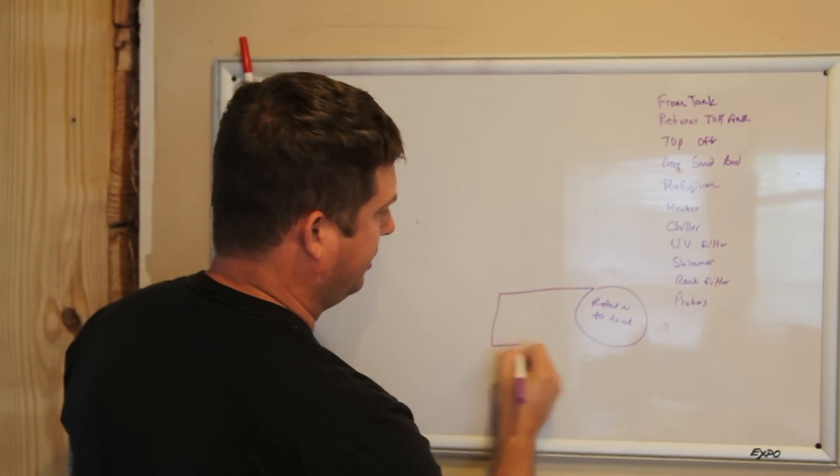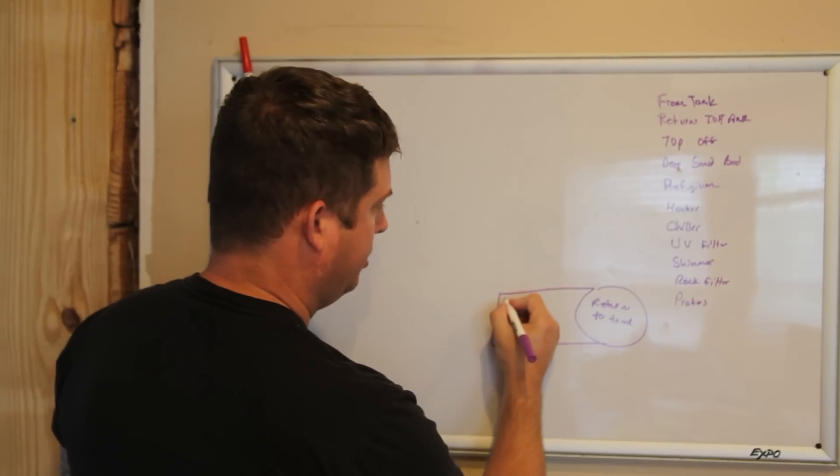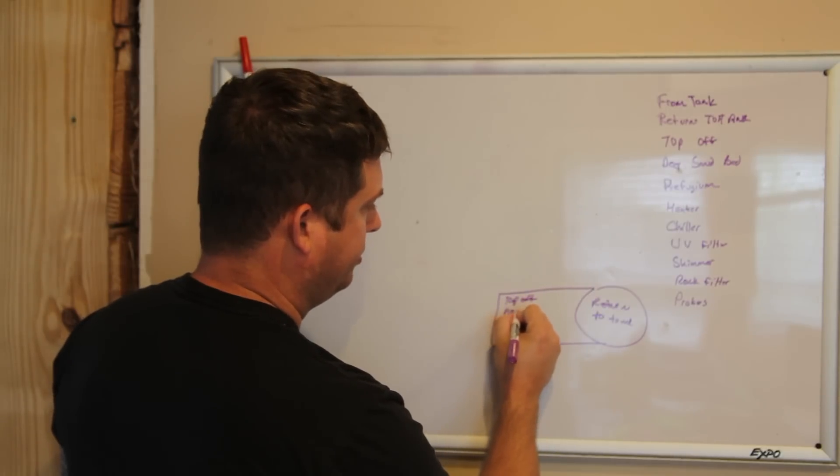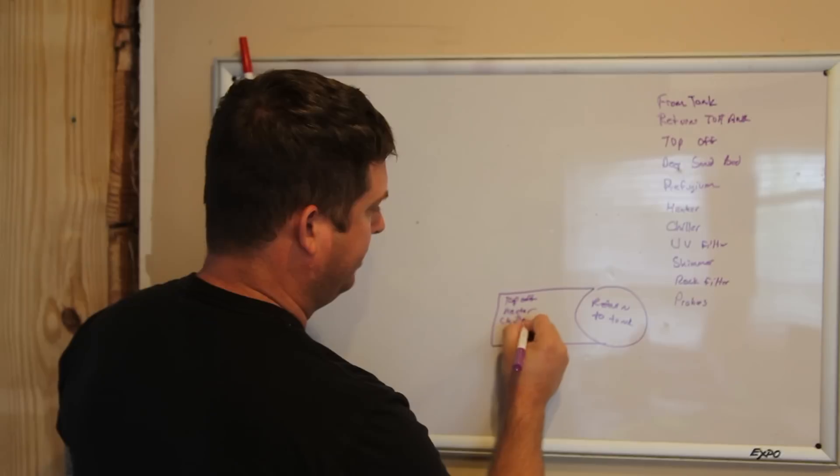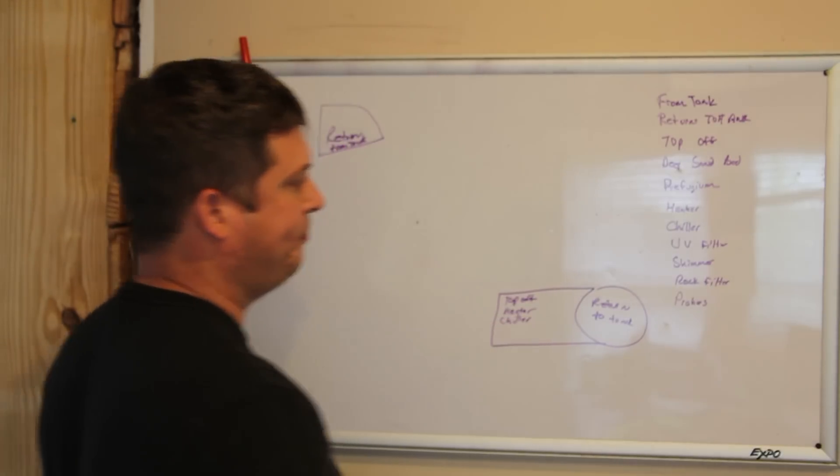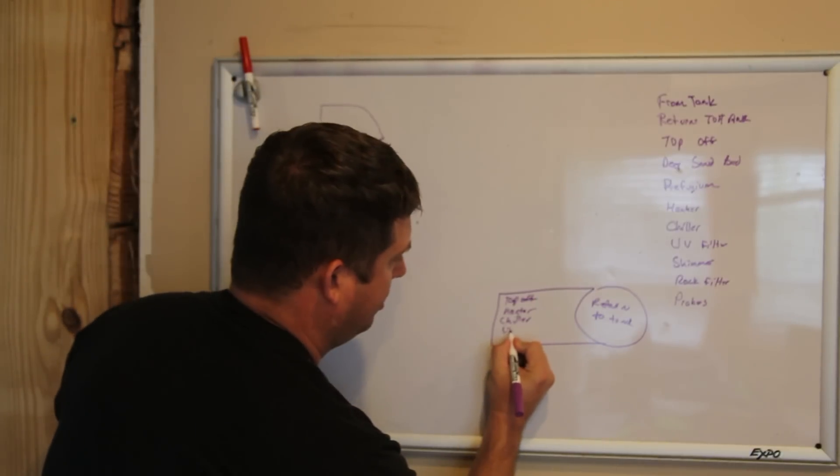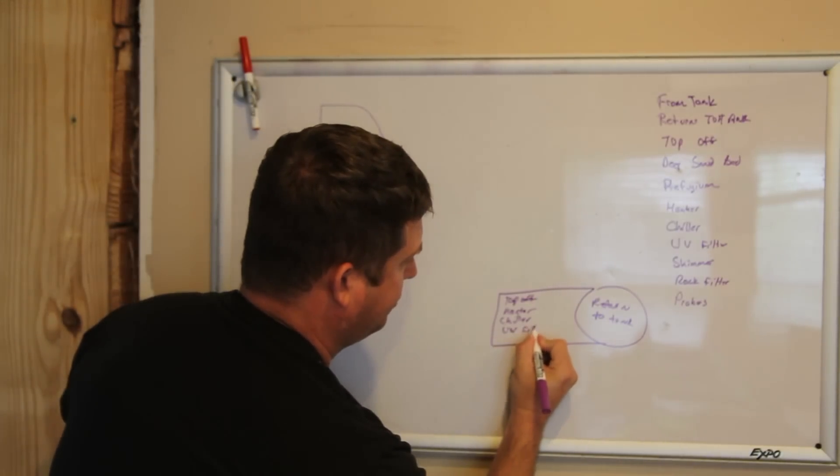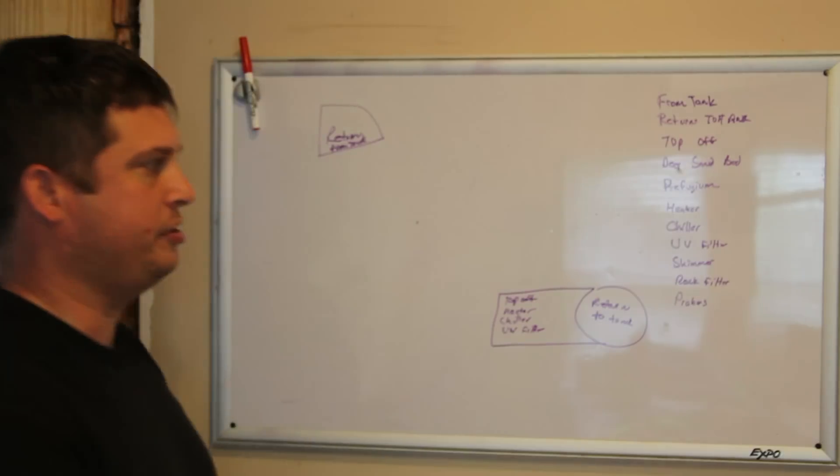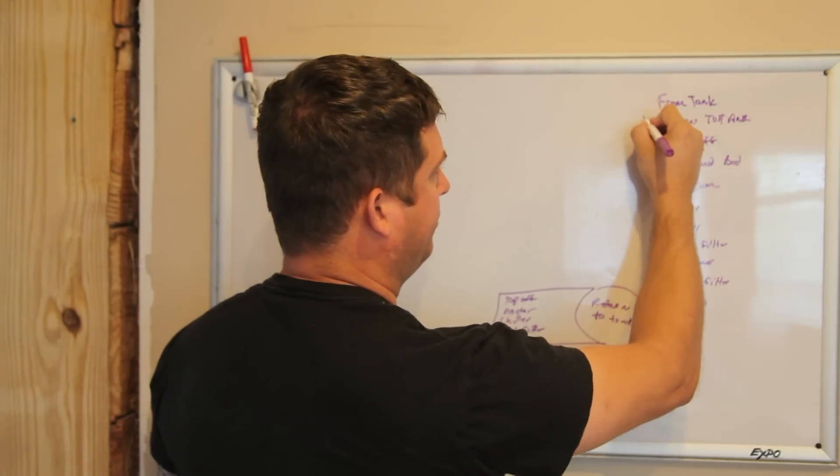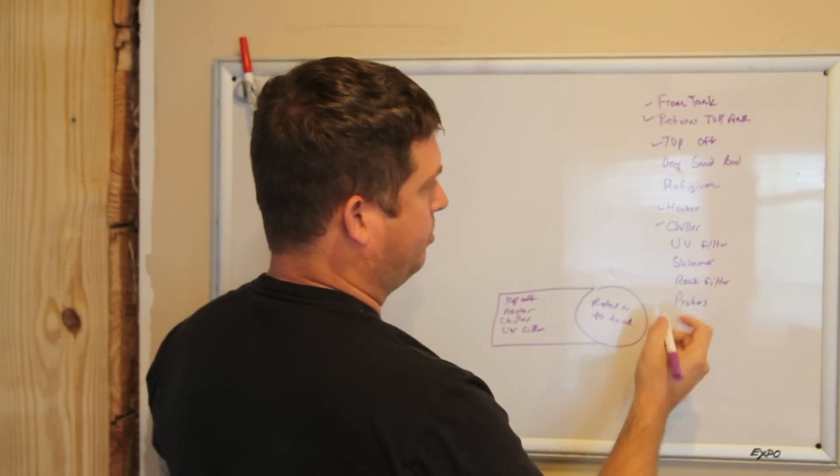So I'm going to extend this. My top-off is going to go in here, my heater is going to go in here, my chiller intake and return is going to go in here, my UV filter pickup and return is going to go in here. Next, I'm going to put a little check mark next to the functions as I put them onto my diagram.